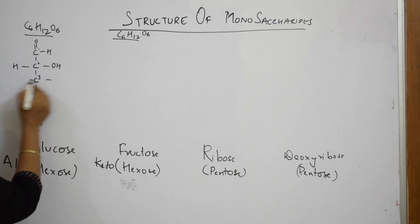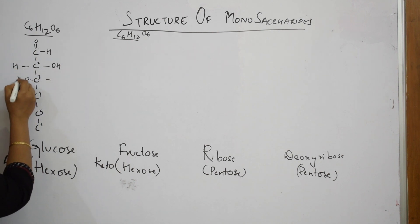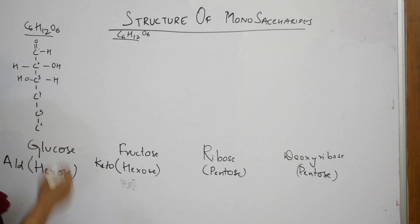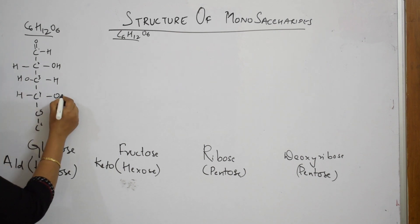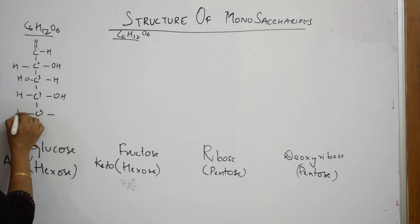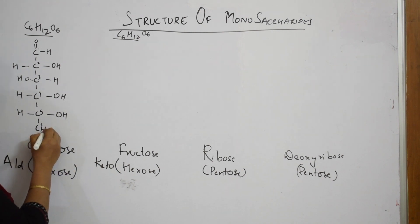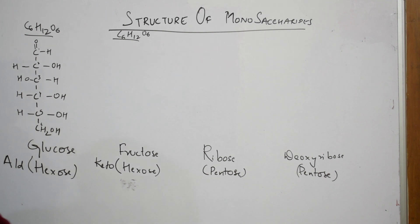Your first carbon has an aldehyde group. That is why it is called aldohexose. Your second carbon has H and OH on either side. Your third carbon has OH and H. Fourth carbon, H and OH. Fifth carbon, H and OH. And your sixth carbon has CH2OH. We've derived it from glyceraldehyde.